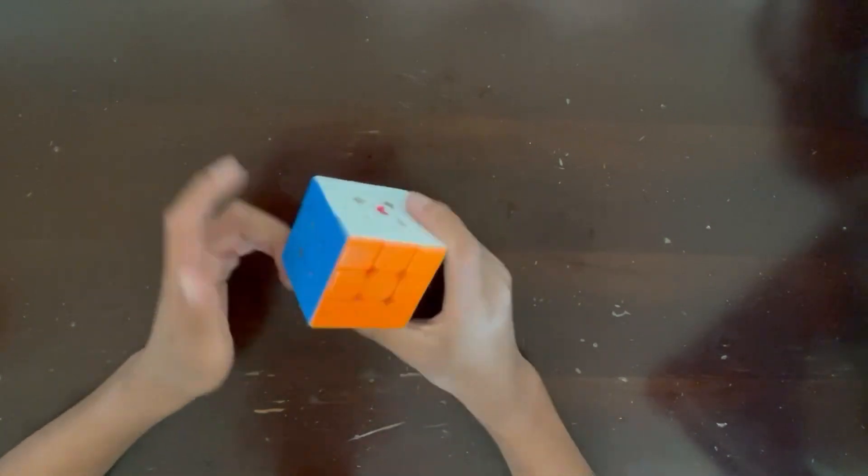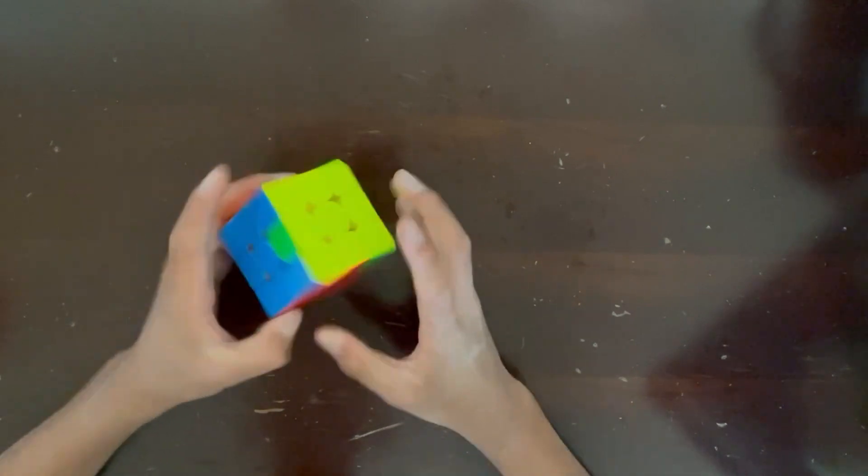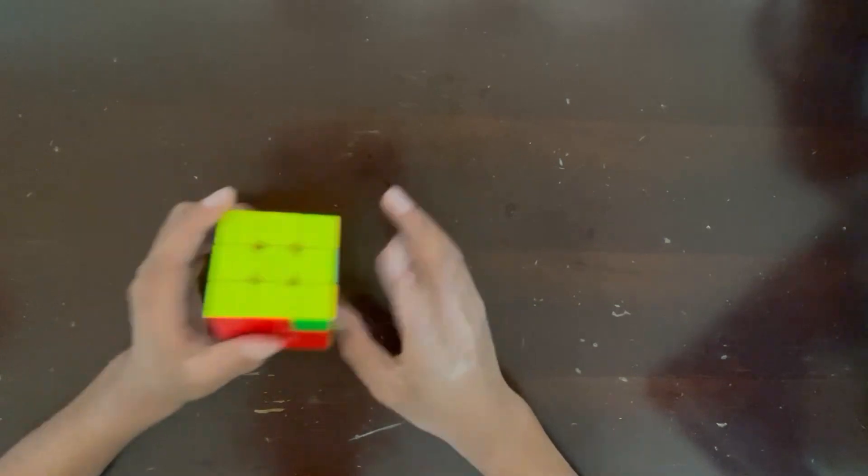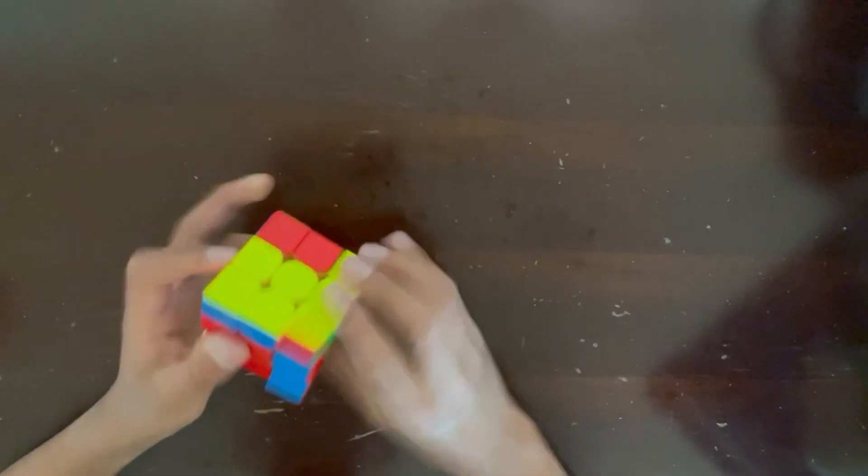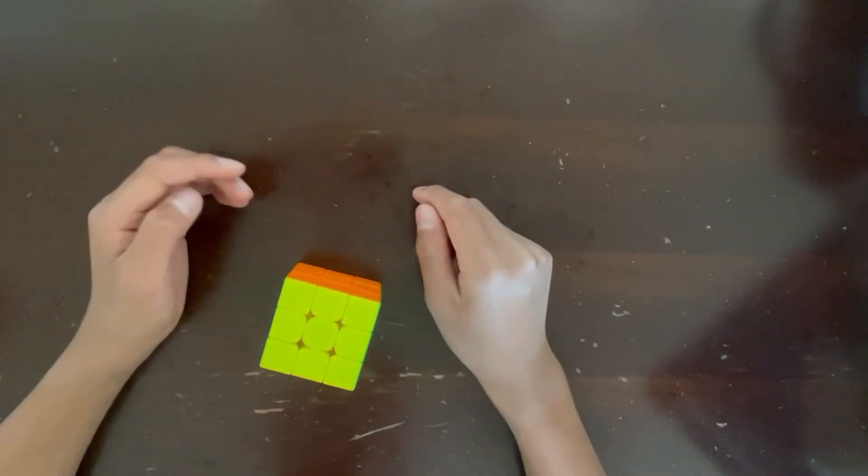This case is really easy to identify because it's literally just looking at the headlights and then looking around for it, and that's the easy way to identify it, and this is what it looks like fast. There we go. And that is how to solve the T-perm on a Rubik's cube.